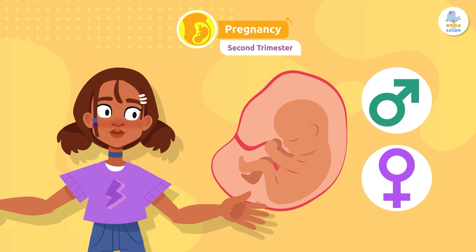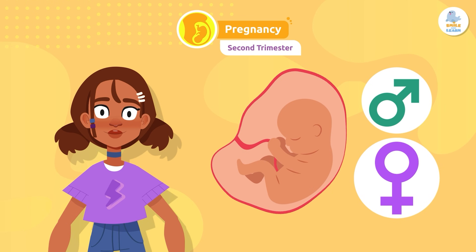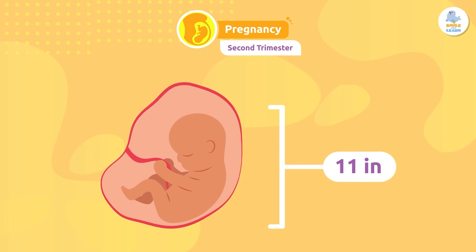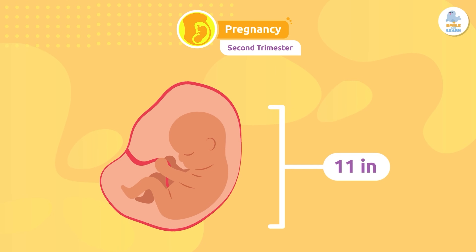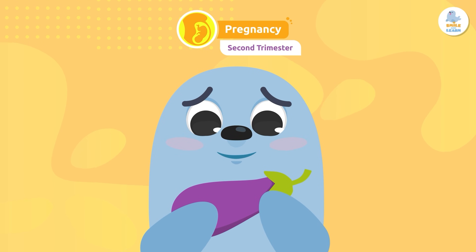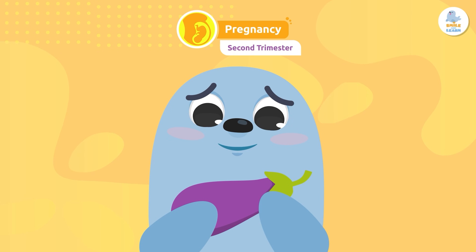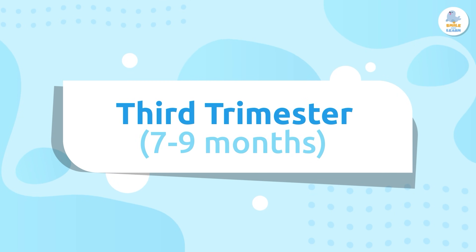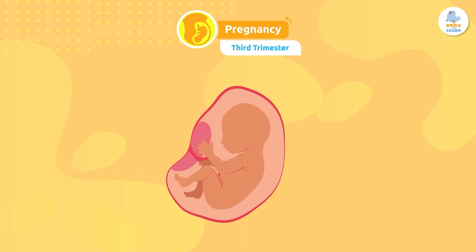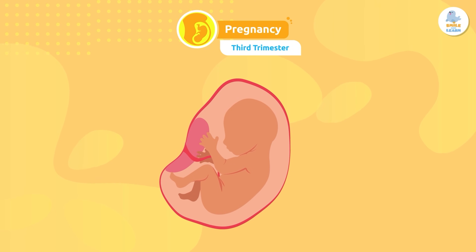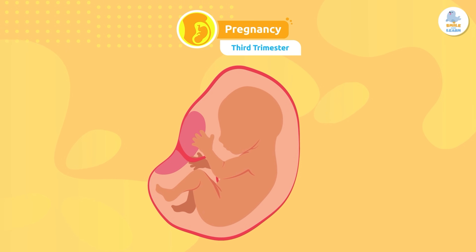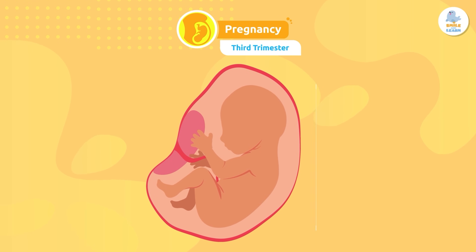Second trimester: in the second trimester, the fetus can move, nerve reflexes appear, and we can identify the sex — whether it's a boy or a girl. It can be up to 11 inches long, almost like a large eggplant.